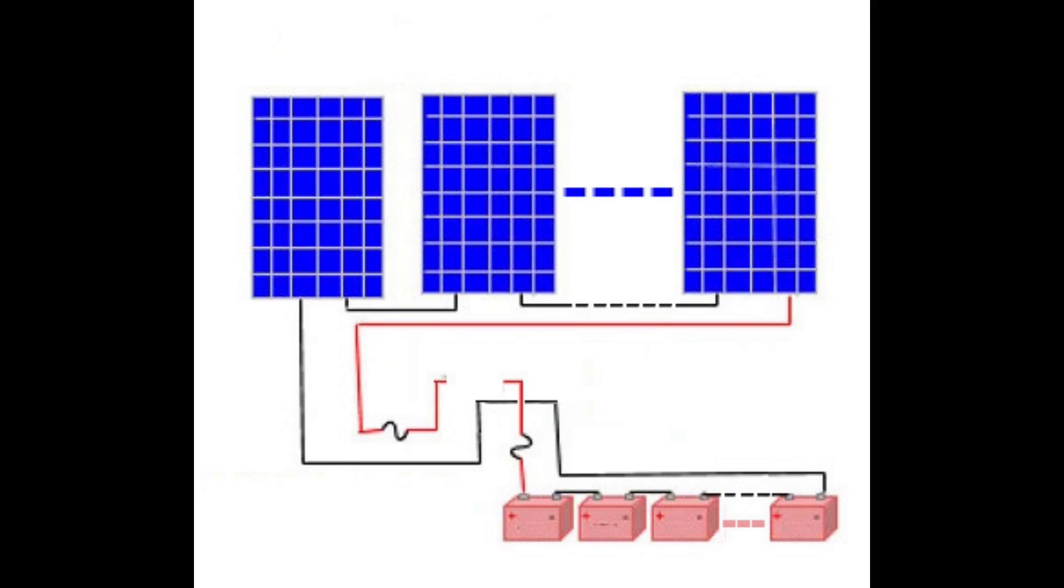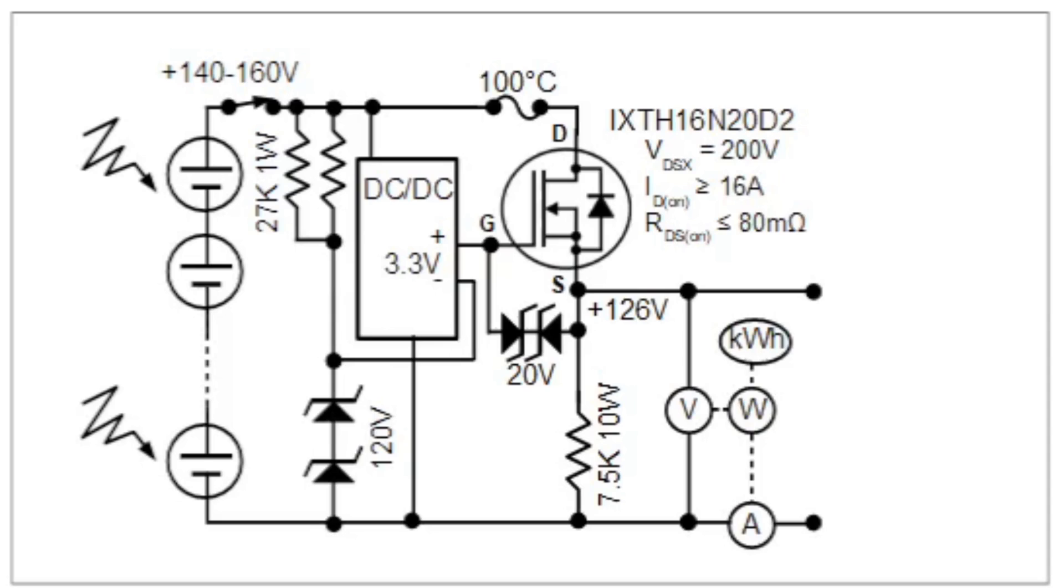When I disconnect the battery, the array instantly recovers to its open circuit voltage, about 160 volts. And you get a pretty strong DC arc between the connections. That could wear out a switch or relay pretty quickly. So there should be something to limit the voltage from the panels. And here it is.